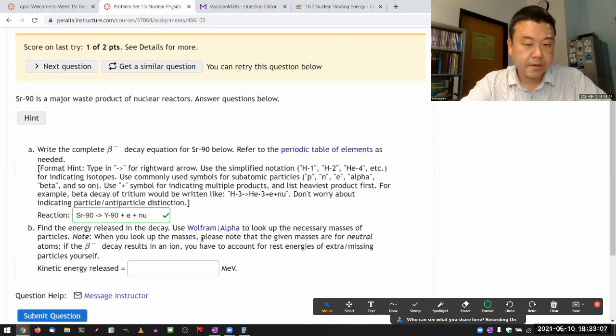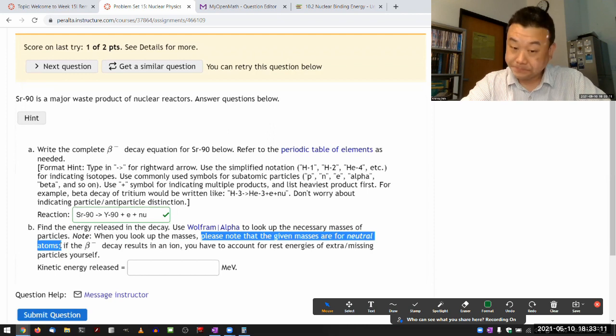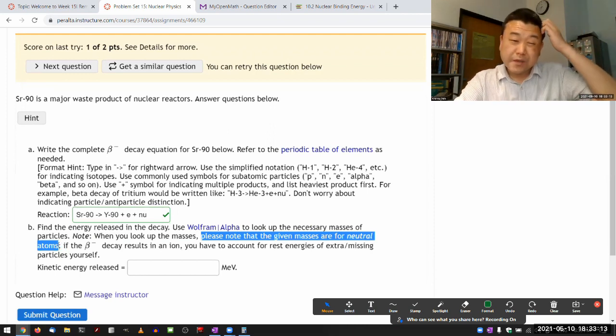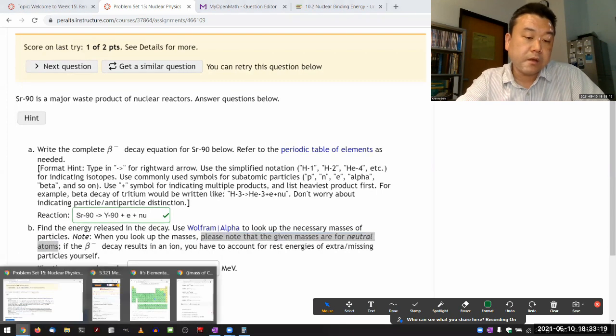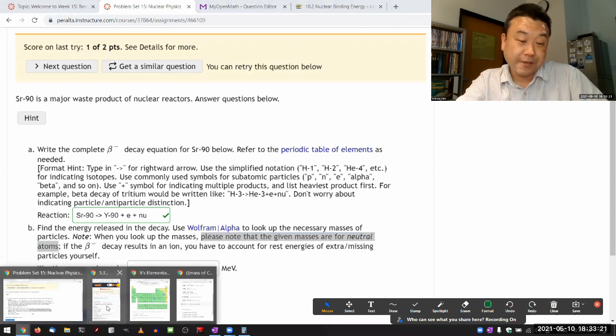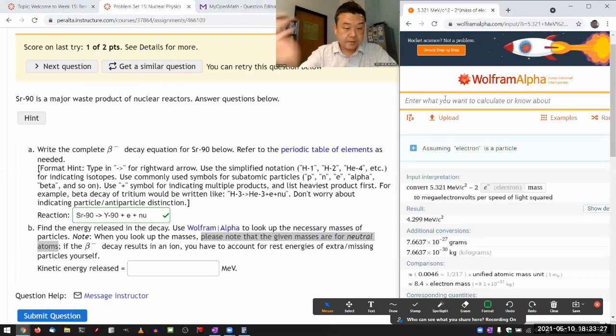Yeah. Please note that the given masses are for neutral atoms. So with the beta decay, because it's explicitly dealing with electrons, I think it's reasonable to ask you to account for that mass of the electron. So, we'll start out with the strontium. So mass of strontium-90, we're going to treat that as being neutral. And we are subtracting off the mass of yttrium-90.